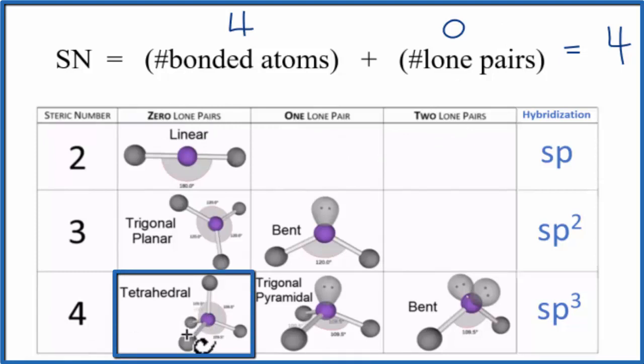The bond angles, they'll be about 109.5. So that's the hybridization and then the shape, molecular geometry for NH4 plus.